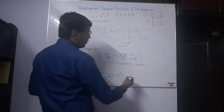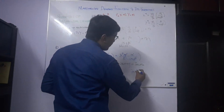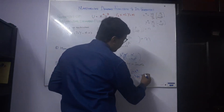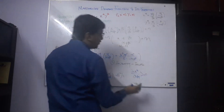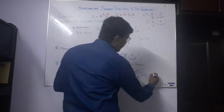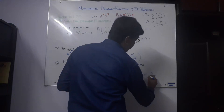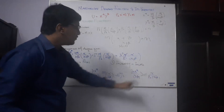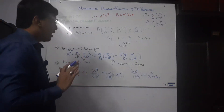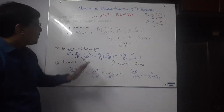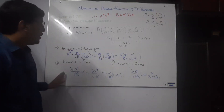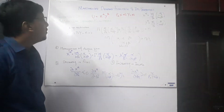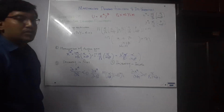Similarly, the Marshallian demand function is increasing in income. Taking the partial derivative of the demand function with respect to income gives a result greater than zero, specifically alpha over alpha plus beta times 1 over Px, which is a positive term. It is straightforward to understand that the Marshallian demand function is decreasing in prices and increasing in income. These are the four properties most commonly discussed in the literature.